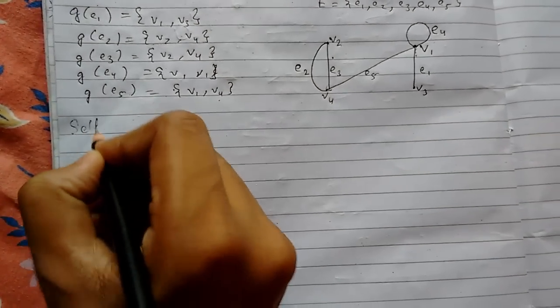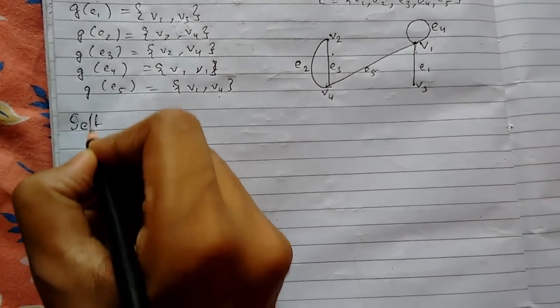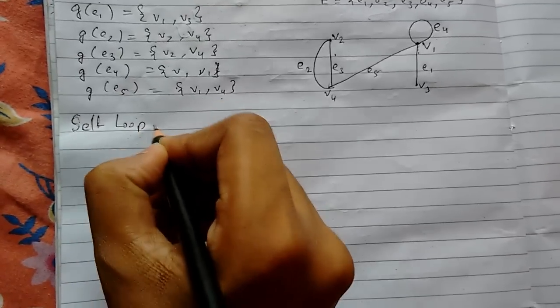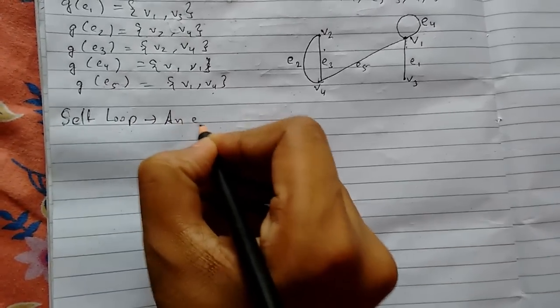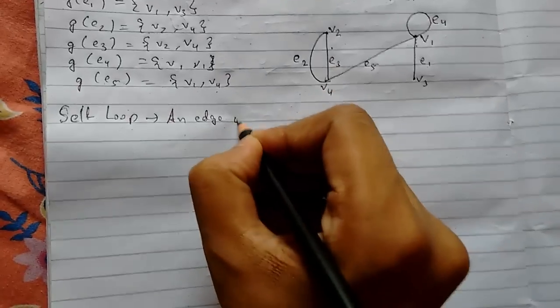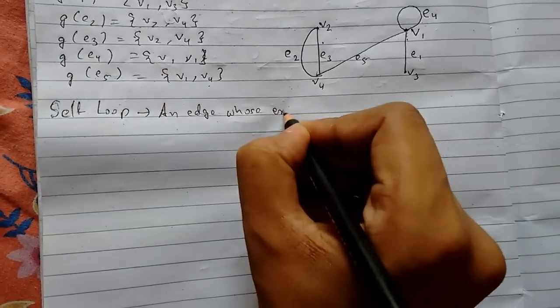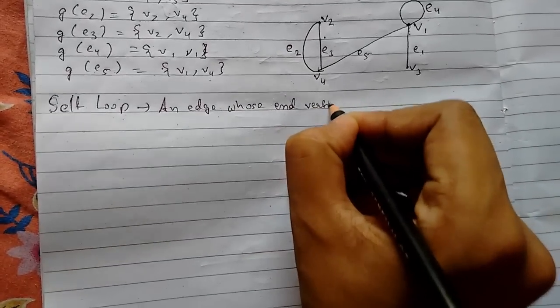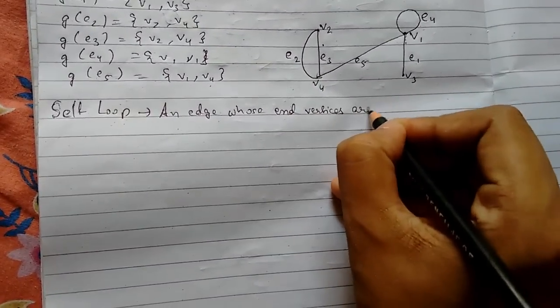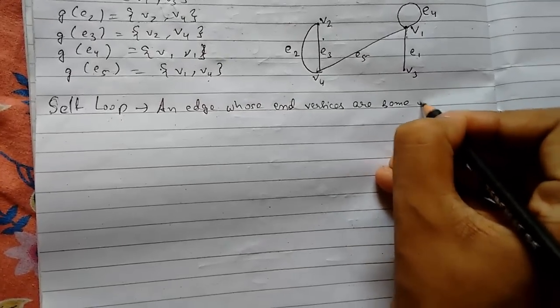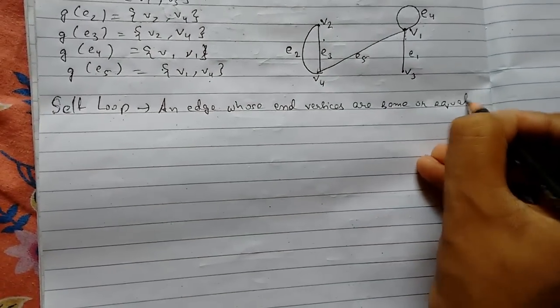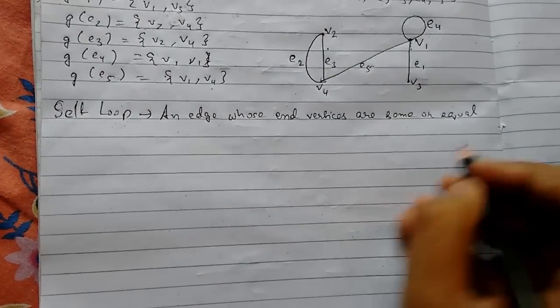First is self loop. An edge whose end vertices are same or equal is said to be a self loop or simply a loop.